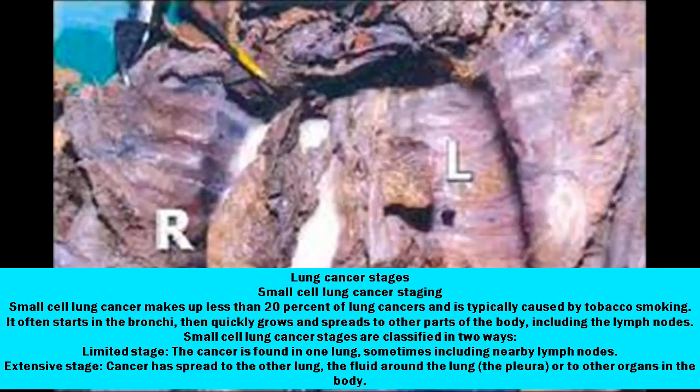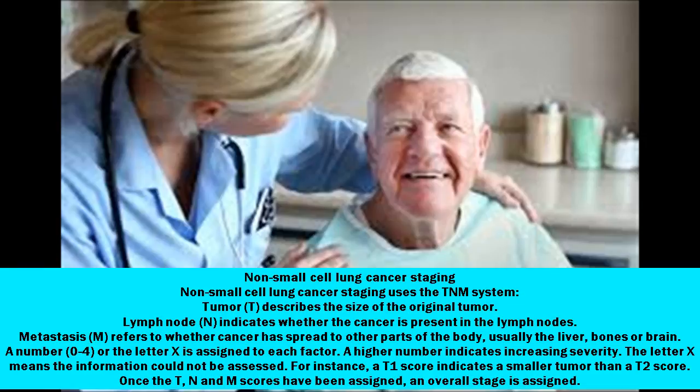Non-Small Cell Lung Cancer staging uses the TNM system. Tumor (T) describes the size of the original tumor. Lymph node (N) indicates whether the cancer is present in the lymph nodes. Metastasis (M) refers to whether cancer has spread to other parts of the body, usually the liver, bones, or brain.